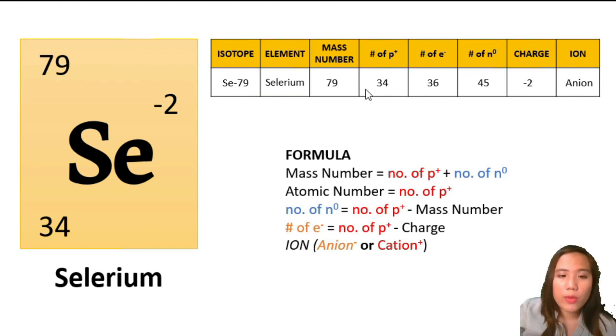For the number of electrons, since the charge is given, 34 minus negative 2, that will be 36. For the neutrons, we have 79 minus 34, so we have 45 neutrons. Since our charge is negative, our ion will be an anion, or the negatively charged atom.